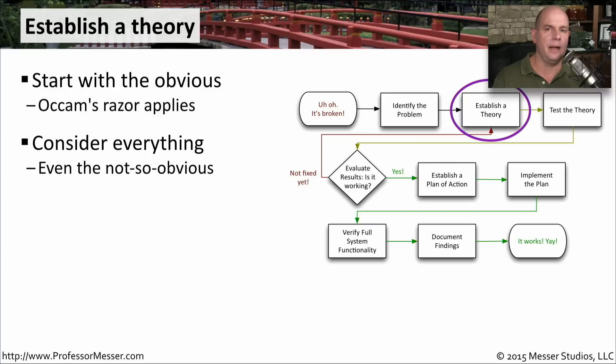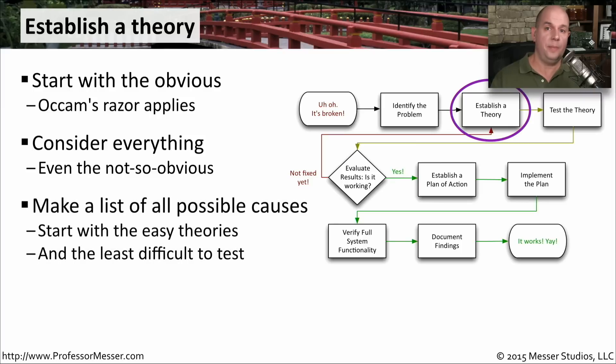Even things that might not be completely obvious at first may still have something to do with the problem at hand. We should make a list of every possible cause for this particular problem. We should start with the easiest things on the top, but we want to list out as many as possible so that we can then determine where we should start and stop with our troubleshooting process.